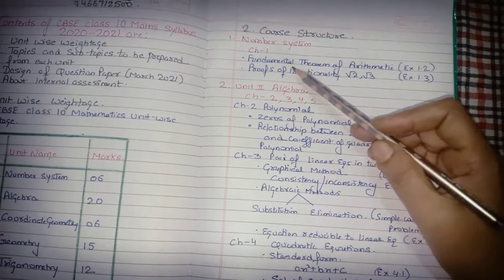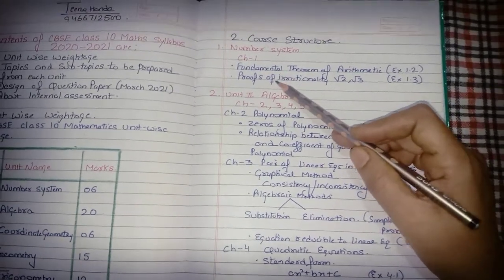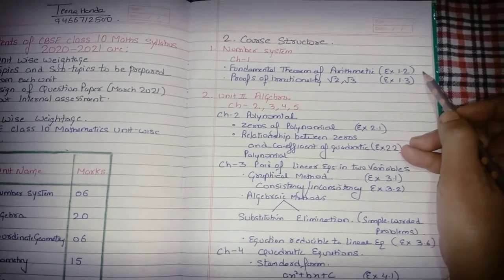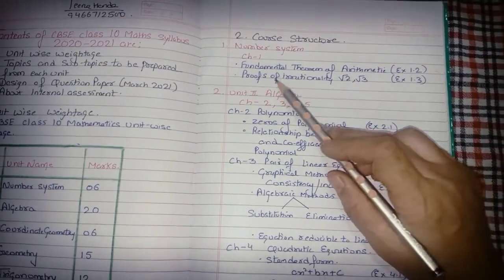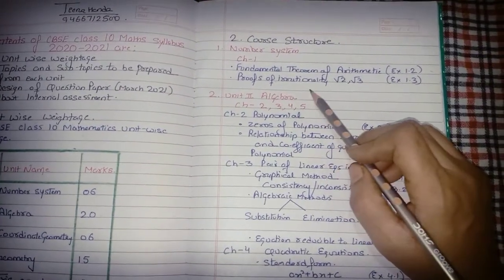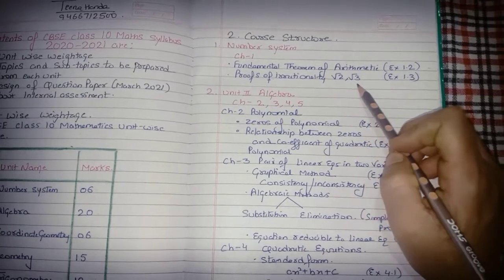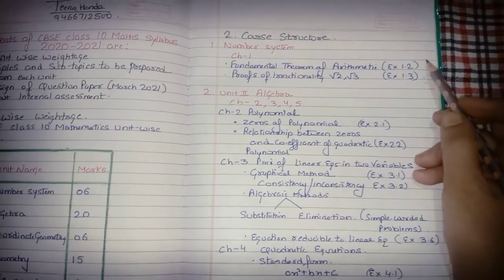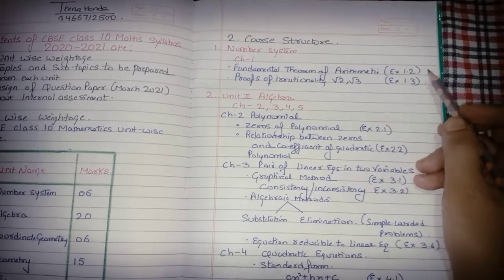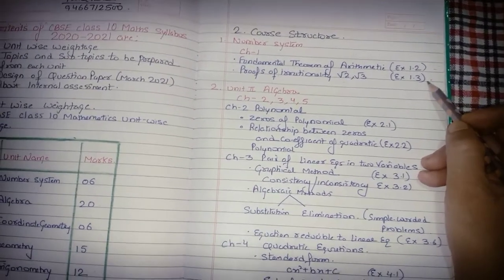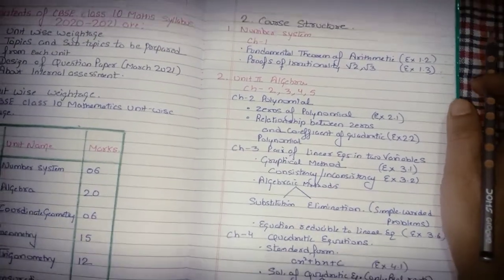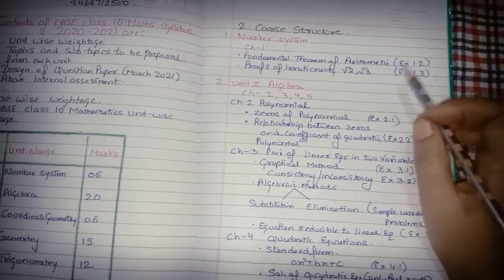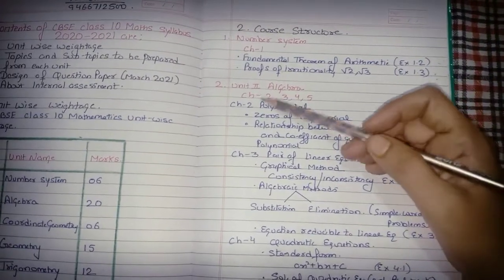In Number System, only two topics need to be prepared: Fundamental Theorem of Arithmetic, which is exercise 1.2, and Proof of Irrationality of √2 and √3, which is exercise 1.3. So from Chapter 1, prepare only 1.2 and 1.3. You do not need to do 1.1 or 1.4.